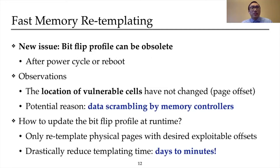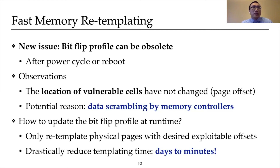We additionally observe a new issue: the bit-flip profile collected for DeepHammer can become obsolete, especially after a system power cycle or reboot. This could be a significant hurdle since the attack's success relies on accurate flip profile information. Interestingly, we observe that when the bit-flip profile changes, the location of vulnerable cells remains the same, and mostly only the flip direction is reverted. We believe this is due to data scrambling by the memory controller. We therefore propose a fast re-templating scheme where, before hammering, the attacker checks if the flip profile is obsolete, and if so, only retests the pages in the old flip profile whose vulnerable bit offsets are of interest according to the bit chain. We find this approach can drastically reduce templating time from days to minutes.